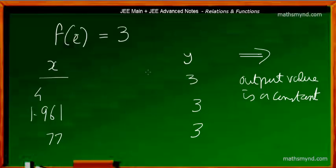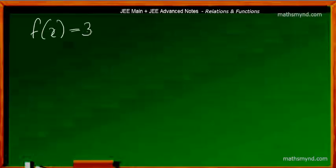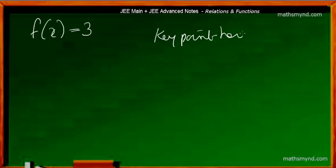Now how is this possible? That's the key question which we ought to ask. When we say f of x is equal to 3 is a constant function, we know that for a particular process you ought to be getting a constant result. So now we can look at three examples to drive home the point. The key point here is to get the output as 3.